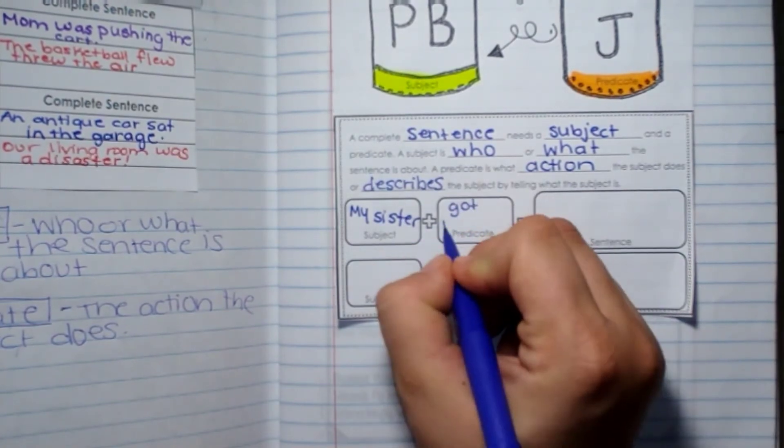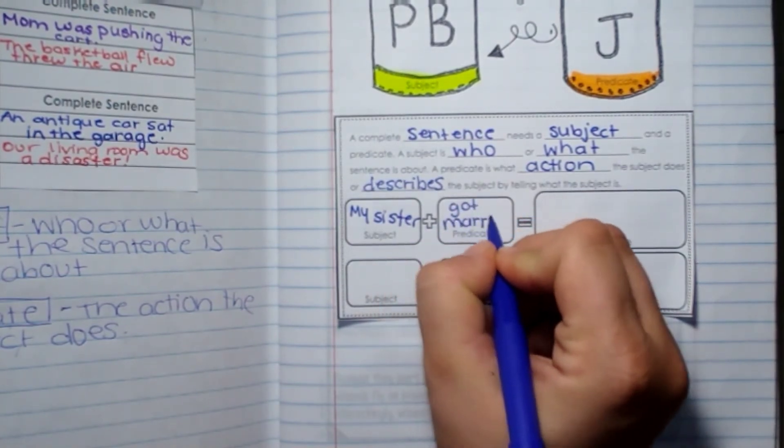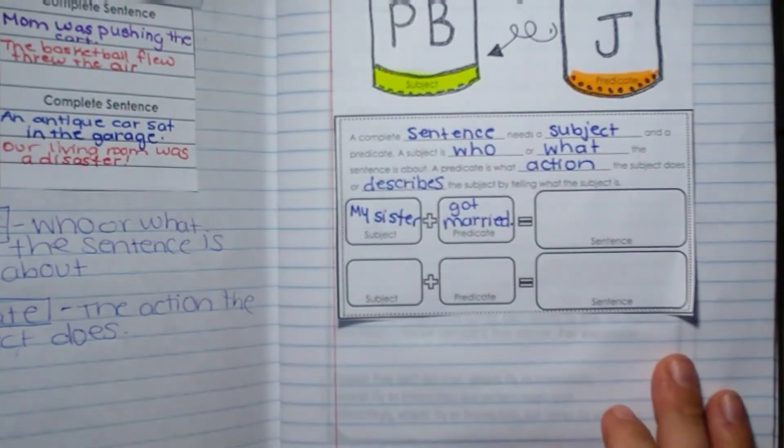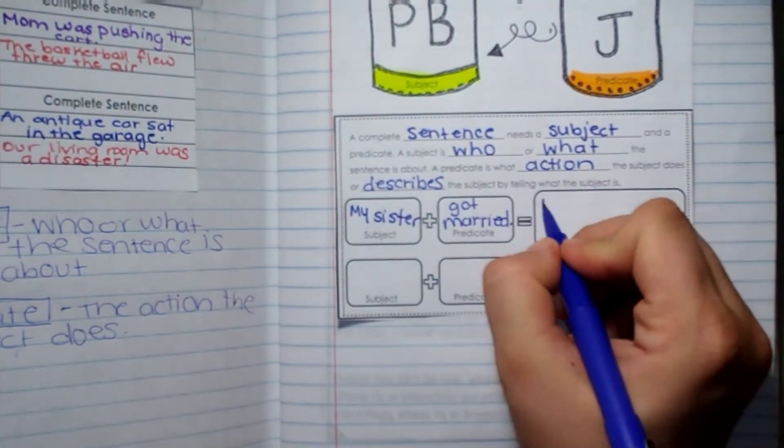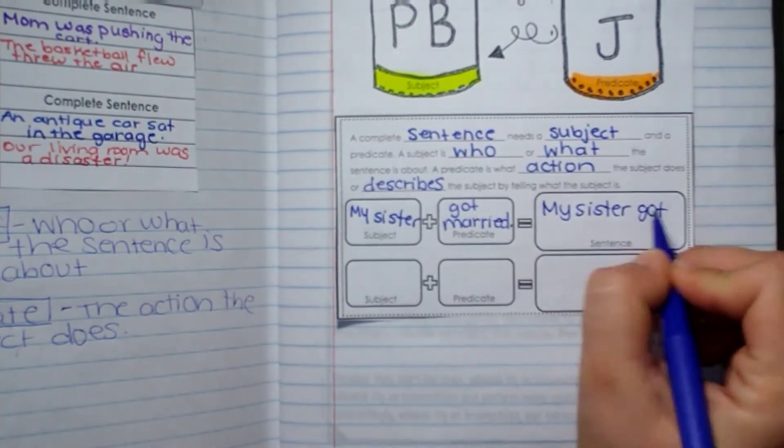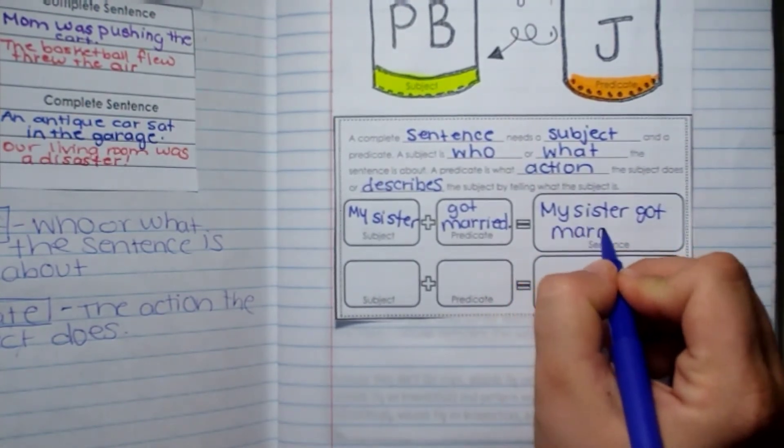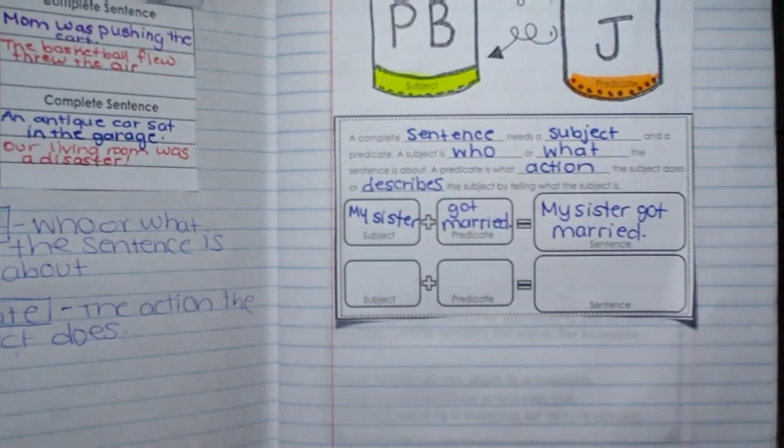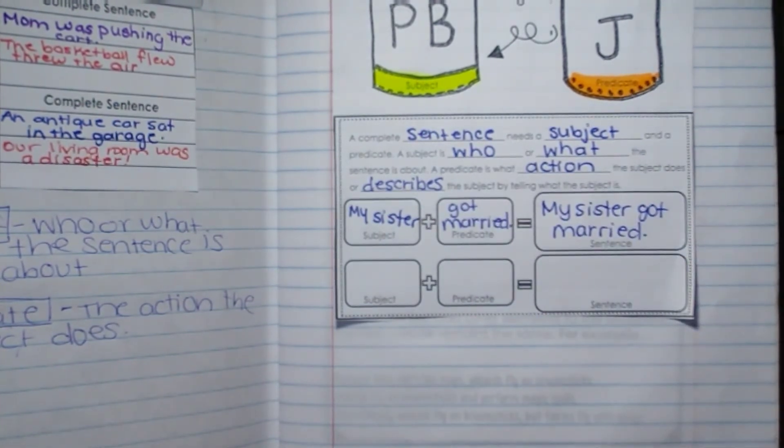My predicate is got married. Okay, so I'm going to put it together. My sister got married. Who did it? My sister. What did she do? Got married.